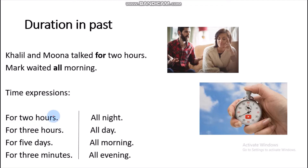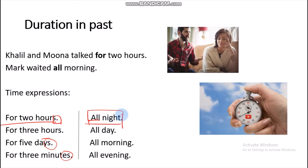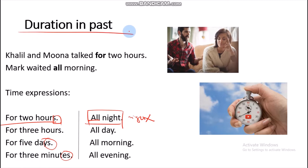For two hours کے ساتھ آپ کے پاس plural form آتی ہے — two days، minutes وغیرہ plural ہوتے ہیں۔ لیکن all day، all night، all morning کے ساتھ singular form آتی ہے — all nights غلط ہو جائے گا، all night، all day، all morning، all evening صحیح ہے۔ یہ بات آپ کو غور کرنے کی ہوگی۔